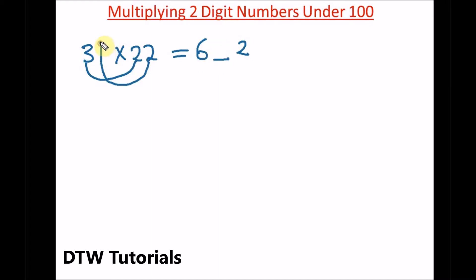Multiply 1 times 2, which is 2, and 3 times 2, which is 6. Add them up: 6 plus 2 is 8. So we write 8 here. You can see if you punch it in your calculator, you'll get 682. If you practice on your own, you can get this faster than the calculator.